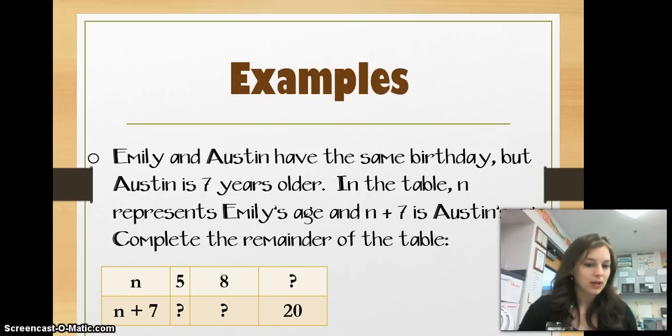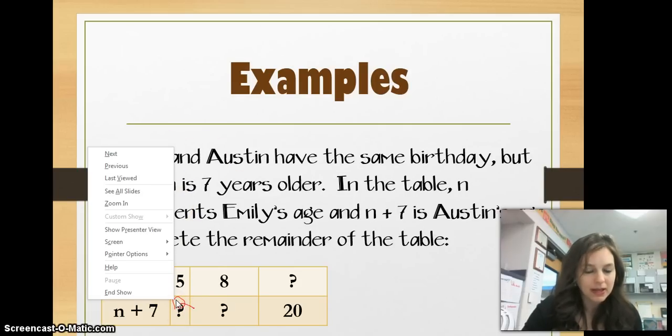So, we know that if Emily is 5, let me find my pointer, that means Austin is 5 plus 7. So, that's 5 plus 7 is 12. So, in this case, we'd have 12 here.